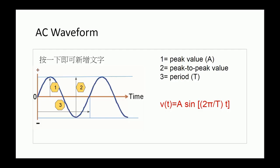Arrowhead number 2 means peak-to-peak value, and arrowhead number 3 means a period, using letter T to illustrate. Looking at just the voltage, we can describe a sine wave as a mathematical function, just as the equation shown at the right side of this slide. As a reminder, the time is measured in seconds.